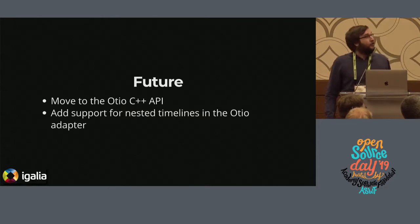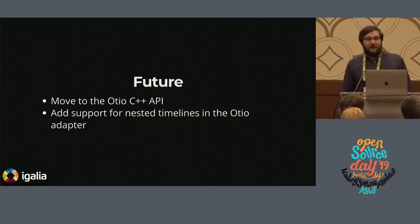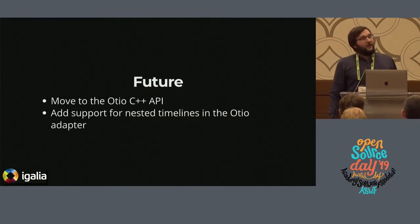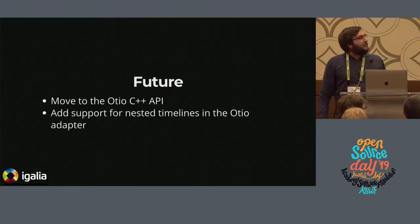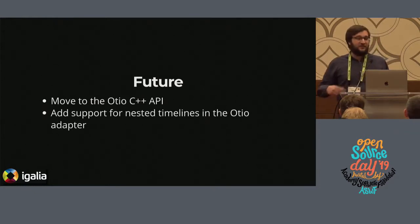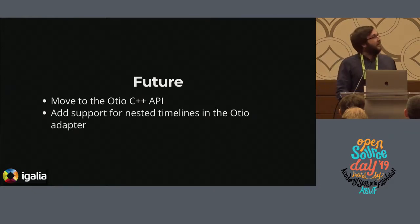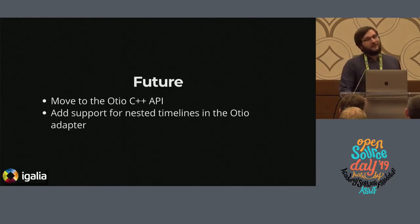In the future, for the GES OTIO formatter we'd like to move to the C++ API. Some bits are missing — as you cannot currently do the conversion with the adapters using the plain C++ API — so that's something to be done. We are also working on implementing nested timelines in the GES OTIO adapter. We recently added support for nested timelines in GES itself, and now we're leveraging that in OTIO. All this work is in the GStreamer master branch, so you can grab it now — you have to build master — but in about six months it will all be released.